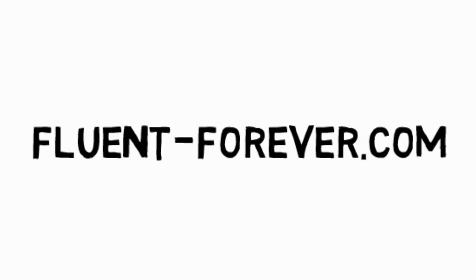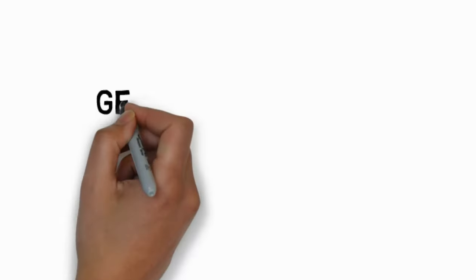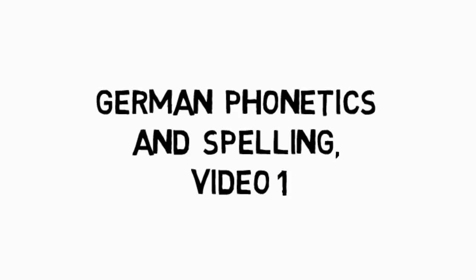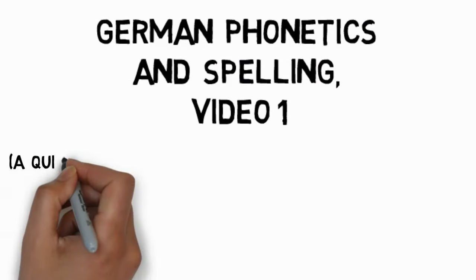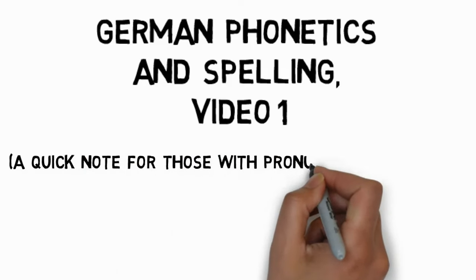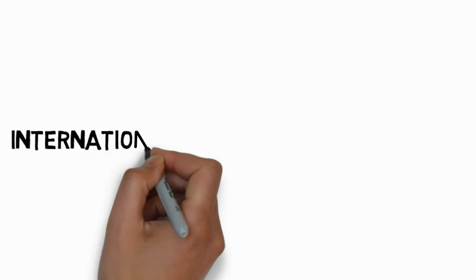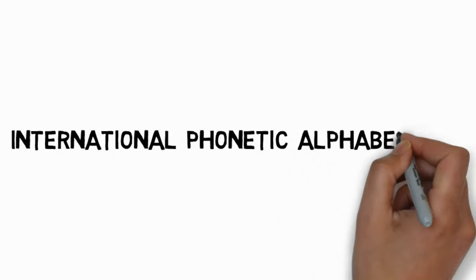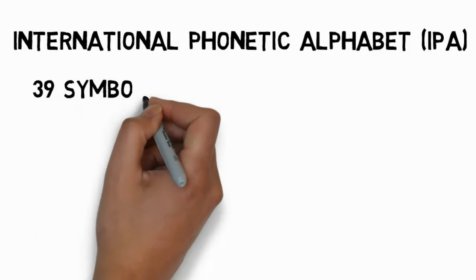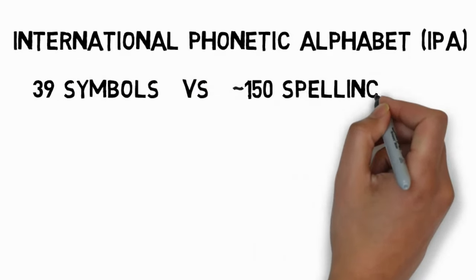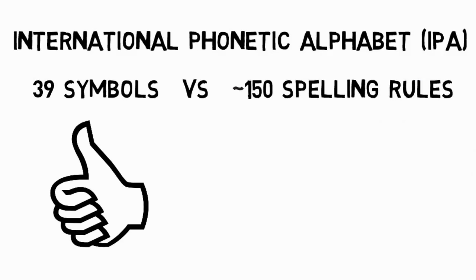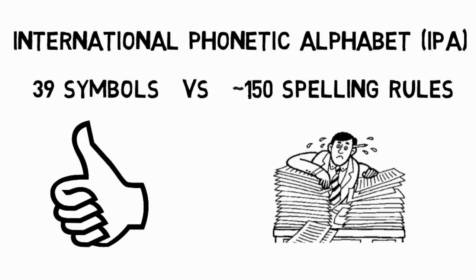Hi, this is Gabe from FluentForever.com. In these three videos, I'm going to show you the bare essentials of German phonetics and spelling. If you're using one of my pronunciation trainers, don't worry about memorizing any of this — the trainer will do that for you. Just watch and pay attention. Everything you see here will show up sooner or later within the trainer. I'll be going through German using the International Phonetic Alphabet, or IPA. This lets us simplify our discussion a lot, since I only need to talk about 39 symbols, many of which you know already, instead of trying to wade through nearly 150 spelling rules. That being said, let's get started.